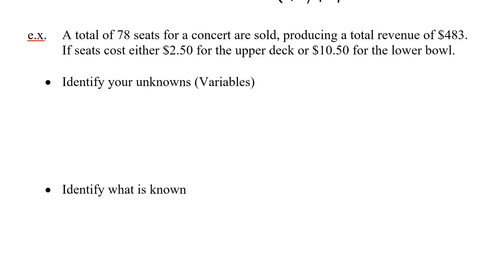A total of 78 seats for a concert were sold, producing a total revenue of $483. The seats cost either $2.50 for the upper deck or $10.50 for the lower bowl — so you've got the cheap seats and the expensive seats. From this information, we're going to have to determine two equations and then see if we can actually solve these. Before we start solving, we have to make equations.